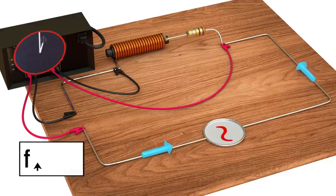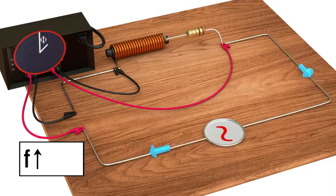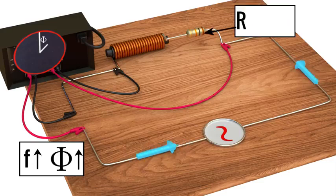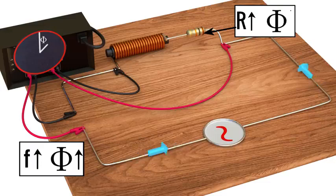The higher the frequency of the electricity, the greater will be the inductive reactance and the phase difference. A higher resistance value reduces this phase difference.